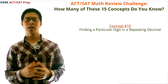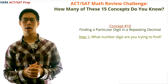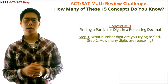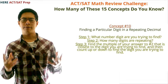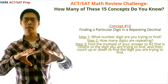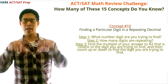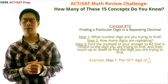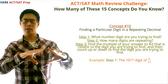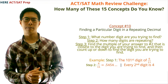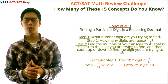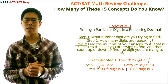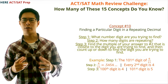Concept number ten: finding a particular digit in a repeating decimal. There are three steps. Step 1: identify which digit number you're trying to find. Step 2: determine how many digits are repeating. Step 3: find the multiple of that count closest to your target digit, then count up or down. For example, to find the 101st digit of 6 ÷ 11: 6 ÷ 11 = 0.5454 repeating, so two digits repeat. Every multiple-of-2 digit is 4, so the 100th digit is 4. Therefore the 101st digit is 5.